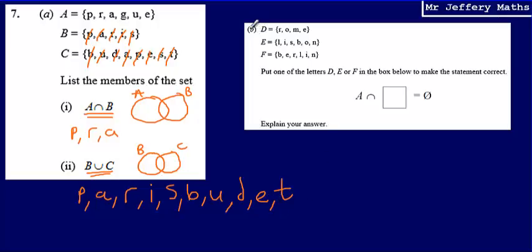So on to question B, and we've got the sets D, E, and F. And we're asked to put one of the letters D, E, or F in the box below to make the statement correct. And then we've got A intersection, or A and, one of the letters above is equal to this symbol. Now all that this symbol means, this is what we call the null event. And the null event refers to mutually exclusive events. It means events which cannot occur at the same time. Or another way to think about this is that they share no elements. So we can think of this again in another way. So A and something else will be equal to zero. The sets share no elements.